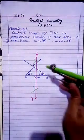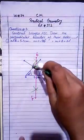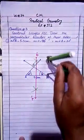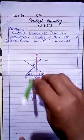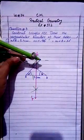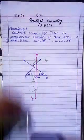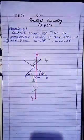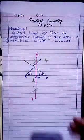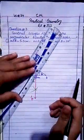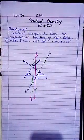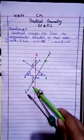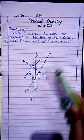Now the second side is BC. Open the compass to more than half but less than the full length of BC. Draw arcs above and below from point B. Now put the compass at point C and draw arcs above and below. If the arc cannot intersect, extend it and draw extra arcs. Join the two intersection points. This is the second perpendicular bisector of side BC — name it B dash and C dash.